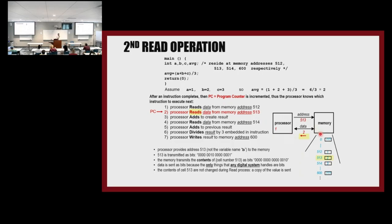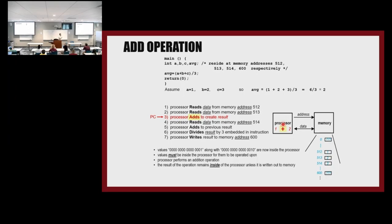The second value, 2, comes from address 513 and is also stored in the processor. Now we have 1 and 2 in the register file, and the processor does the first addition by activating the adder in the ALU. We don't want to send data back to memory yet because we still have more computation to do. Bad programming would be sending intermediate results back to memory — that adds unnecessary instructions and wastes energy, power, and time. Instead, keep intermediate results in the register file.